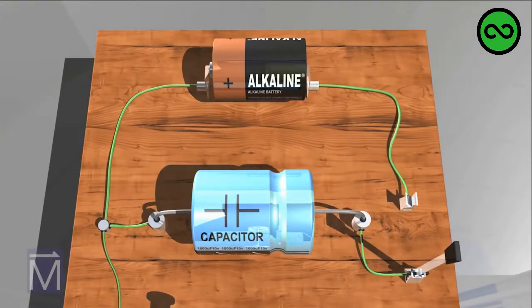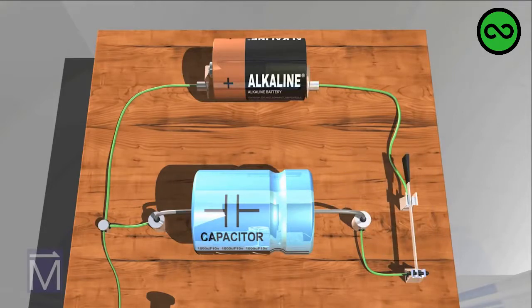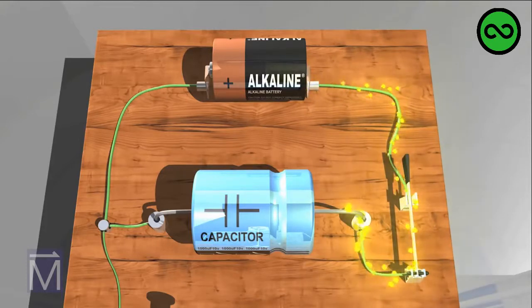First we need to charge a capacitor. By closing the switch, we create a circuit that includes both the capacitor and the battery. Electrons flow from the battery to the capacitor, where they are stored.